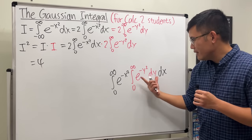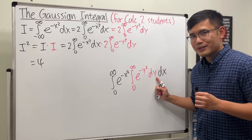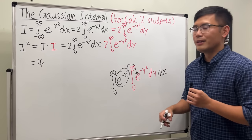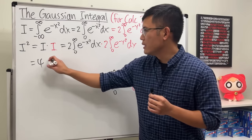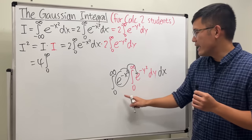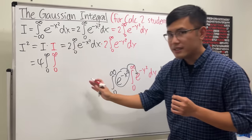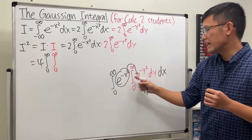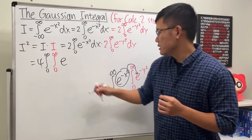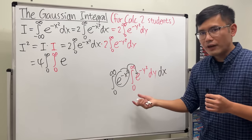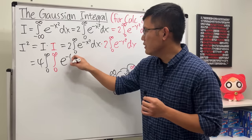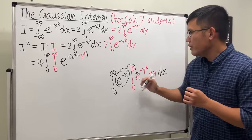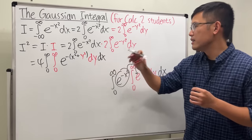Now looking at the inner integral, we are in the y world, so x acts as a constant. We can bring the e to the negative x squared inside, and multiplying the two exponentials — same base, add exponents — we get e to the negative (x squared plus y squared). So I squared equals four times the double integral from zero to infinity of e to the negative (x squared plus y squared) dy dx.